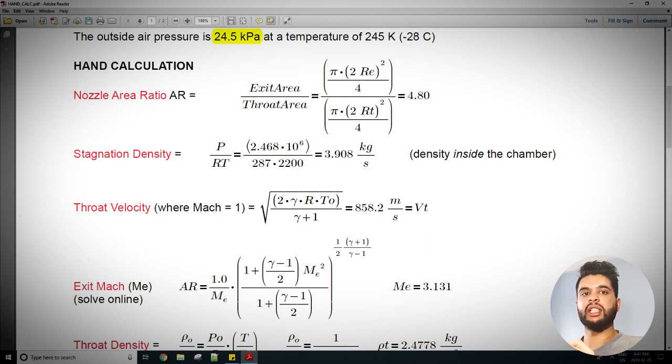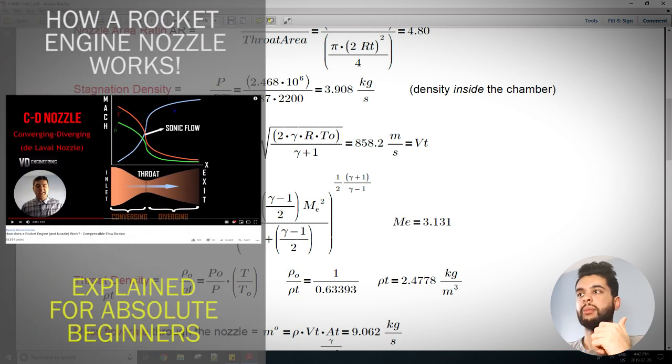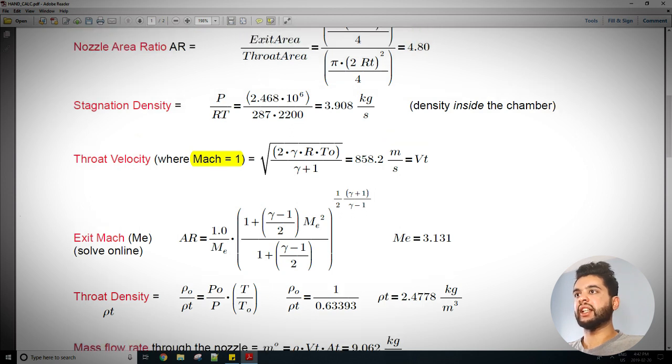If you're taking a course in compressible flow, you most likely will be doing these a lot. First thing to look at is the nozzle sizing, the area ratio, which is simply the exit area divided by the middle area, about 4.8. Next we have the density. Since air is an ideal gas, we can use the ideal gas law p equals rho RT and calculate density is 4 kilogram per meter cubed. The velocity in the middle here where the Mach number equals 1—and if you don't understand why the Mach number equals 1, I do recommend you watch my nozzle video—we have about 858.2 meters per second using this formula: square root of 2 gamma R T naught over gamma plus 1, and T naught is simply this stagnation temperature here.